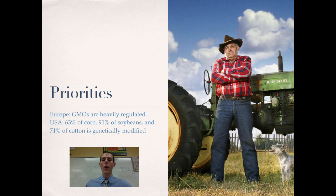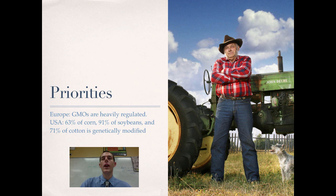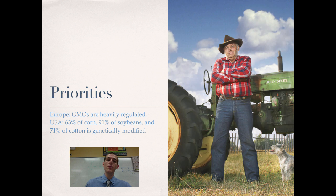Now, if we are talking about where genetically modified organisms are used, feelings about them, sentiment — it's all going to depend on where you are and what your priorities are. If you are in Europe, you are not going to see much by the way of GMOs. Genetically modified organisms are highly regulated in Europe and may not even be legal to produce there. Jump across the Atlantic to America: 63% of our corn is genetically modified, 91% of our soybeans are genetically modified, and 71% of our cotton is genetically modified. So I guarantee you that unless you eat a 100% organic diet, you will eat genetically modified organisms every single day. To have the organic label on a food product, it cannot have any GMOs in it.